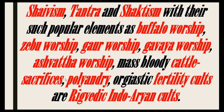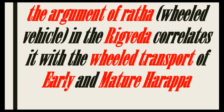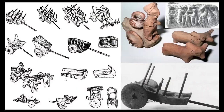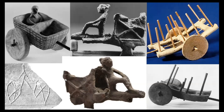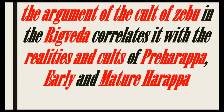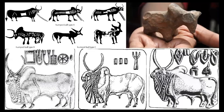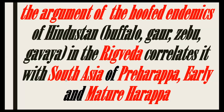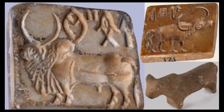The argument of the Radha wheeled vehicle in the Rig Veda correlates it with the wheeled transport of early and Mature Harappa. Here we have many examples — many models of Mature Harappan carts and wheeled vehicles, in clay and bronze, and also inscriptions of Mature Harappa on the same. The argument of the cult of Zebu in the Rig Veda correlates it with the realities and cults of pre-Harappan, early, and Mature Harappa. Three bovine species are depicted: Zebu, Buffalo, and Gaur.